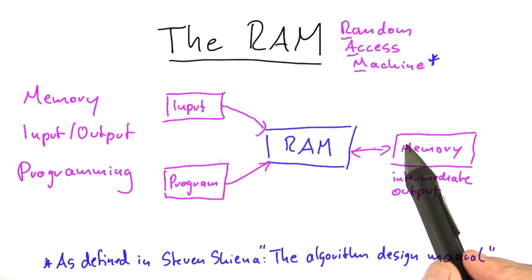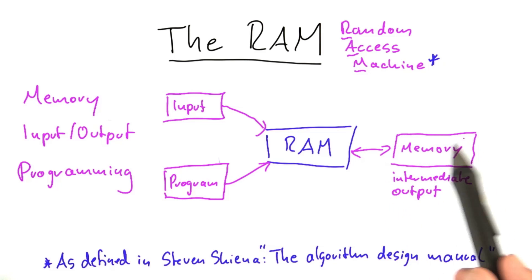Usually when we talk about the memory requirements of an algorithm, what we're talking about is how much of this memory here the RAM is using.